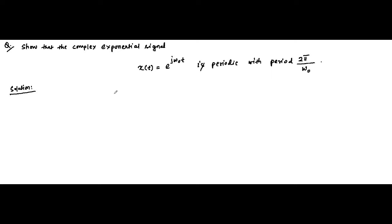If you remember, the basic description of a periodic signal: the requirement is that a periodic signal repeats itself after a fundamental period capital T. That is the basic requirement of a periodic signal. So if e^(jω₀t) is a periodic signal, then it should satisfy this criteria.